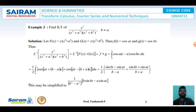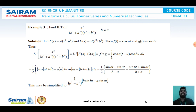After integration and applying the limit, we get (1/2)·[(sin(bt) minus sin(at))/(b minus a) plus (sin(bt) plus sin(at))/(b plus a)]. Taking LCM and simplifying further, we get 1/(b² minus a²) into (b·sin(bt) minus a·sin(at)) as the required solution for s²/((s² plus a²)(s² plus b²)) using the convolution theorem.